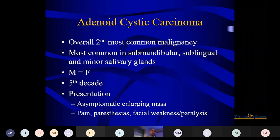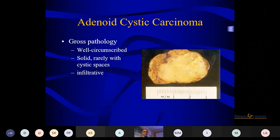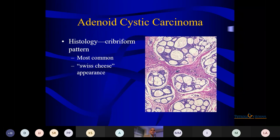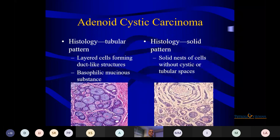Adenoid cystic carcinoma — one of the classic exam slides, seen in the palate, lung, breast, and other sites, but morphology is uniform everywhere. It is the second most common malignancy. Mostly affecting minor salivary glands, with equal sex distribution and a peak in the 5th decade. Patients present with asymptomatic enlarging mass, pain, paraesthesia, and facial nerve paraesthesia. On gross: parotid is the common site, solid with rare cystic spaces, and infiltrative in nature. The cribriform pattern with Swiss-cheese appearance is pathognomonic for adenoid cystic carcinoma.